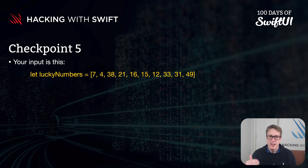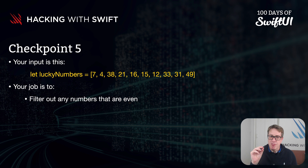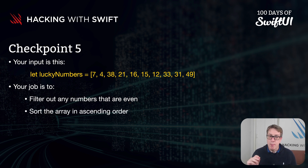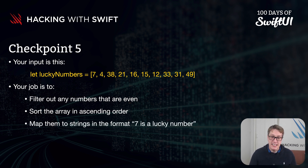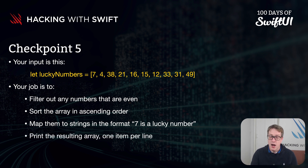Your input is going to be an array: let luckyNumbers be an array of 7, 4, 38, 21, all the way up to 49. Your job is to filter out any numbers that are even — so 4 comes out, 38 comes out, 16 comes out, and so forth — then sort the remaining array in ascending order, then map them to strings in the format '7 is a lucky number', '21 is a lucky number', and finally print the resulting array one item per line.